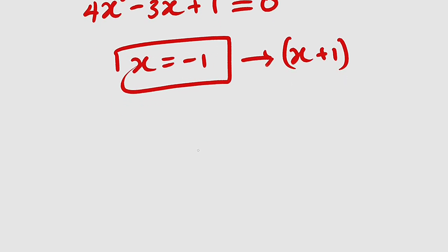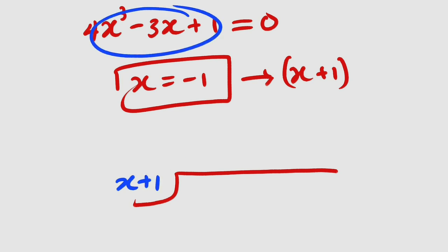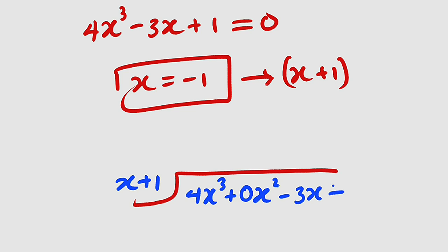Set up the division with x plus 1 outside. Inside we have 4x cubed — since the x squared term is missing, write 0x squared — then minus 3x plus 1. Dividing: x goes into 4x cubed exactly 4x squared times.